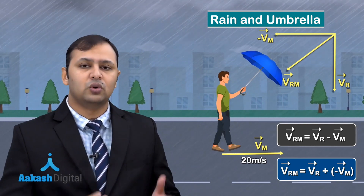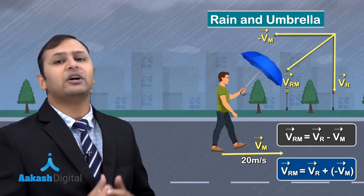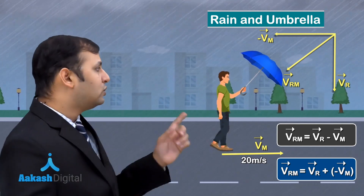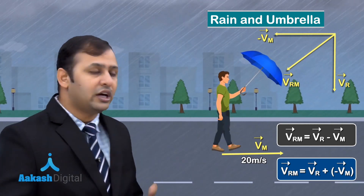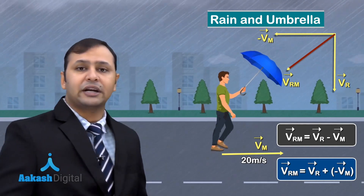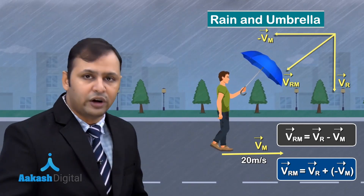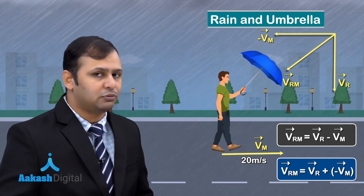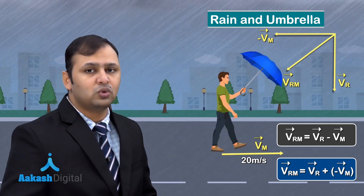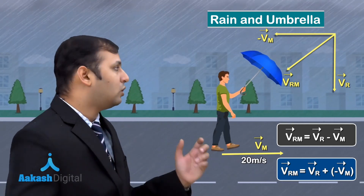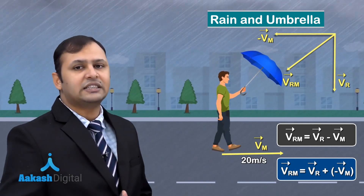Whenever you encounter a rain-umbrella problem, assume the man is running in a particular direction and wind appears to move in the opposite direction, changing the rain's apparent direction. The magnitude of VRM equals the resultant of the component of (−VM) and VRG (velocity of rain with respect to ground).